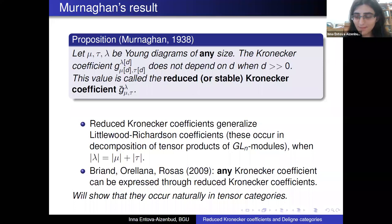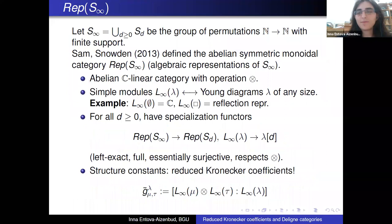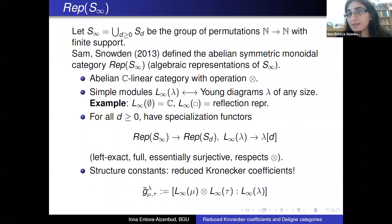My goal today is to show you that these reduced Kronecker coefficients occur naturally in algebraic settings — just like the usual Kronecker coefficients do — and specifically in the context of tensor categories. The first natural context is the representations of the infinite symmetric group S_infinity, which makes sense if you want to study stabilization of representations of symmetric groups.